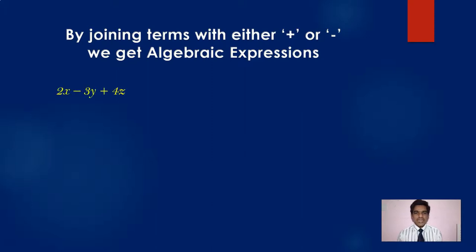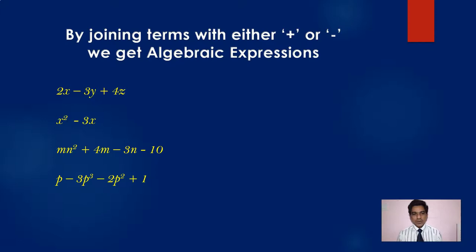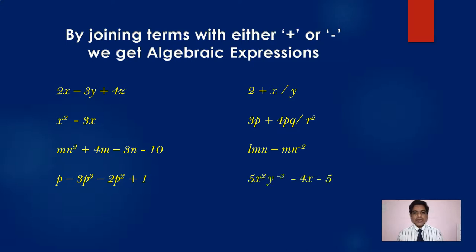Some examples of algebraic expressions: 2x minus 3y plus 4z; x² minus 3x; mn² plus 4n minus 3n minus 10; p minus 3pq minus 2p² plus 1. Also: 2 plus x/y; 3p plus 4pq/r²; lmn minus mn power minus 2; and 5x²y power minus 3 minus 4x minus 5. All these are algebraic expressions.